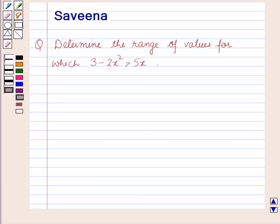Hello and welcome to the session. In this session we will discuss a question which says: determine the range of values for which 3 minus 2x squared is greater than 5x. Before starting the solution of this question we should know about a method.